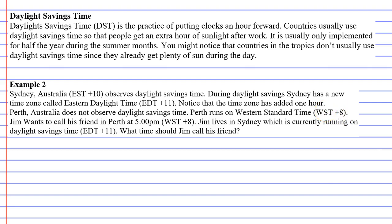Let's get into the question. Jim wants to call his friend in Perth at 5 p.m. Western Standard Time. Jim lives in Sydney, which is currently running on daylight savings time, so they're on plus 11 — 11 hours after UTC. What time should Jim call his friend?